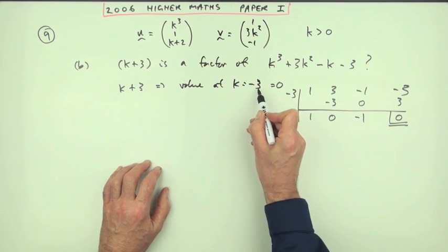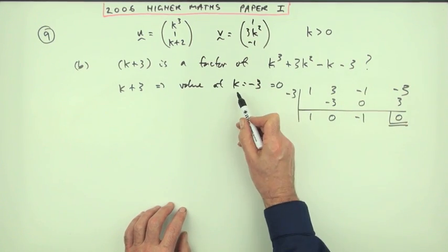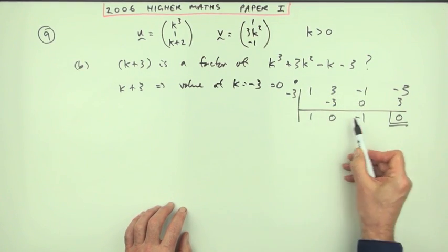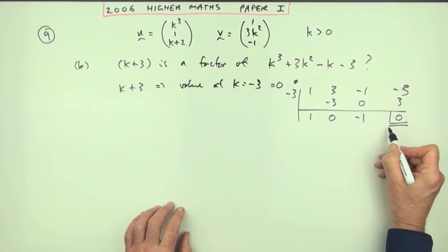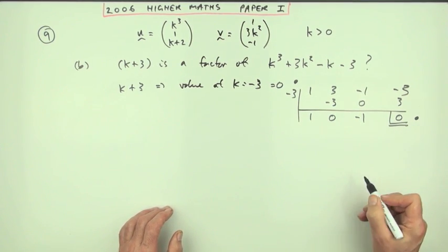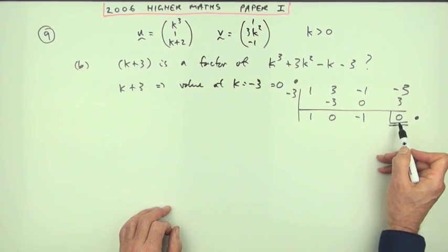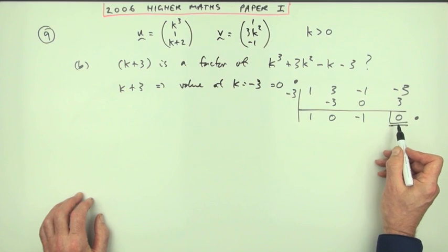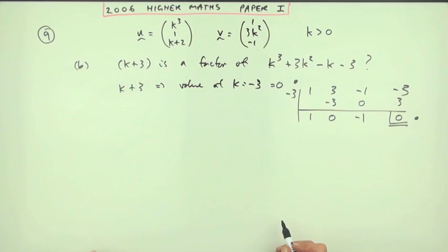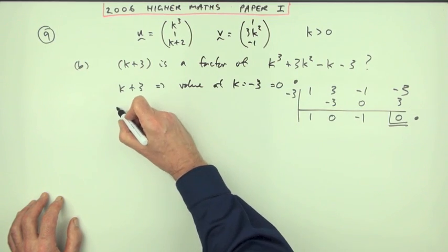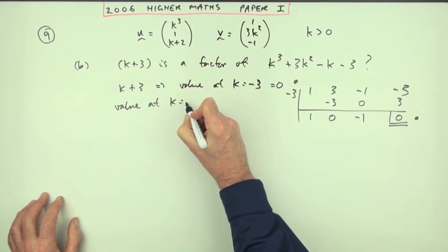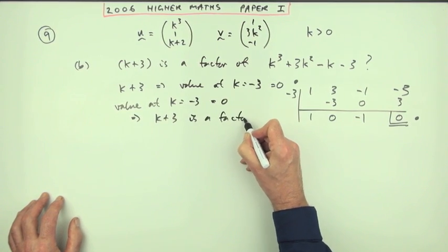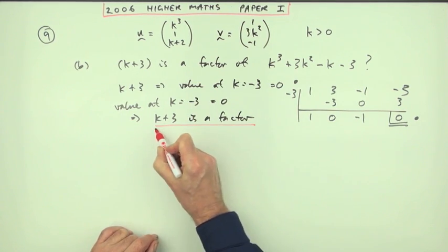There are a couple of marks here. The first mark is for knowing to use -3: if (k+3) is a factor, the root of the equation is -3. The second mark is for getting the answer zero — the marking scheme says underlining it is sufficient. But you should really have a statement: 'the value at k = -3 equals zero.' You could also say 'the remainder on dividing is zero.' Either way, that means k+3 is a factor.